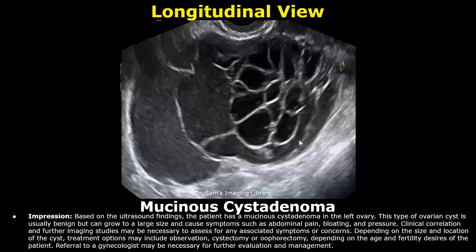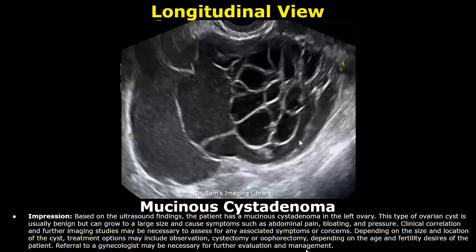In the impression, based on the ultrasound findings, the patient has a mucinous cystadenoma in the left ovary. This type of ovarian cyst is usually benign but can grow to a large size and cause symptoms such as abdominal pain, bloating, and pressure. Then the line of clinical correlation is written, and in the end referral to a gynecologist may be necessary for further evaluation and management.